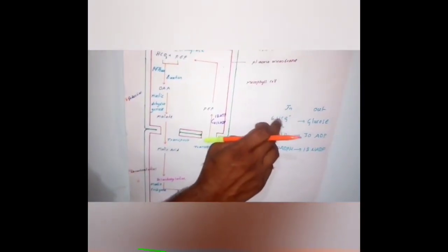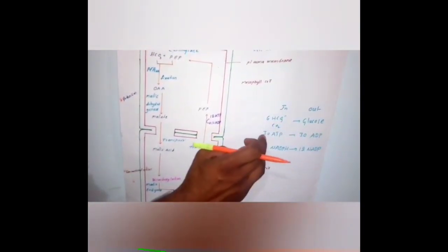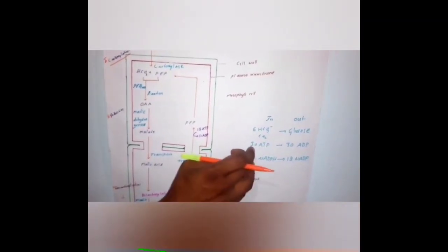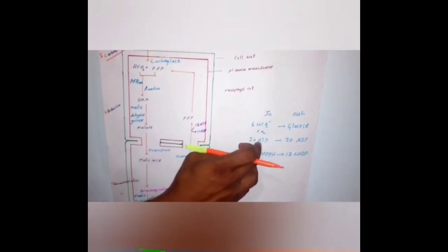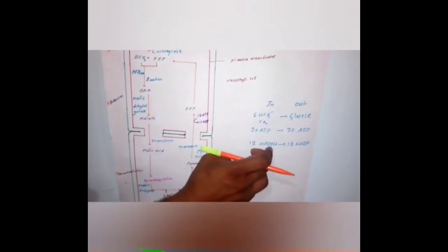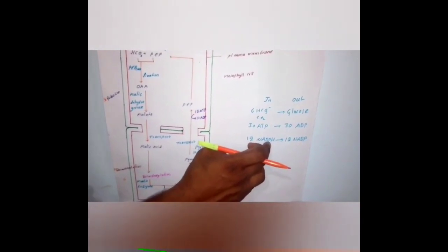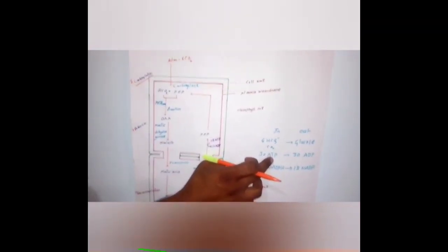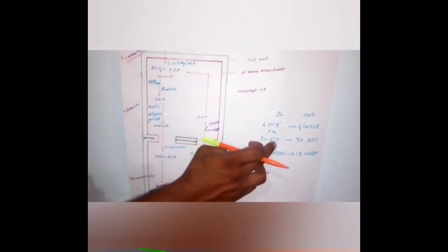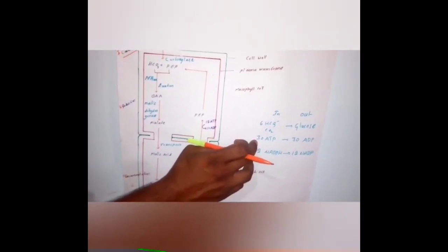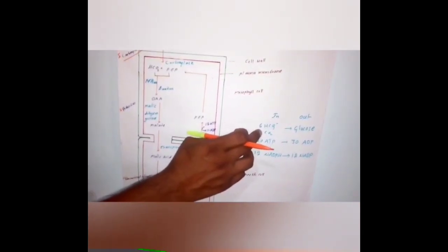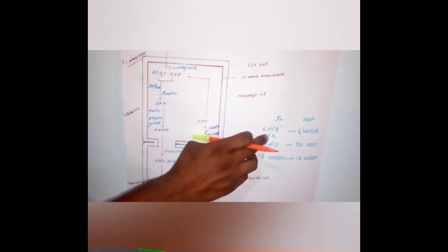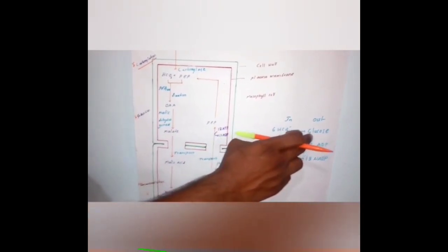In this process, bicarbonates are converted into glucose, and 30 ATPs are consumed. In the regular dark reaction only 18 ATPs are consumed, so here 12 extra ATPs are consumed. 12 NADPH are consumed as usual — in the regular dark reaction also 12 NADPH is used. So C4 uses 30 ATP while C3 uses 18 ATP. Carbon dioxide is not taken in individual gas form; it is taken as bicarbonate form initially, but at last it is converted into carbon dioxide and then into glucose.